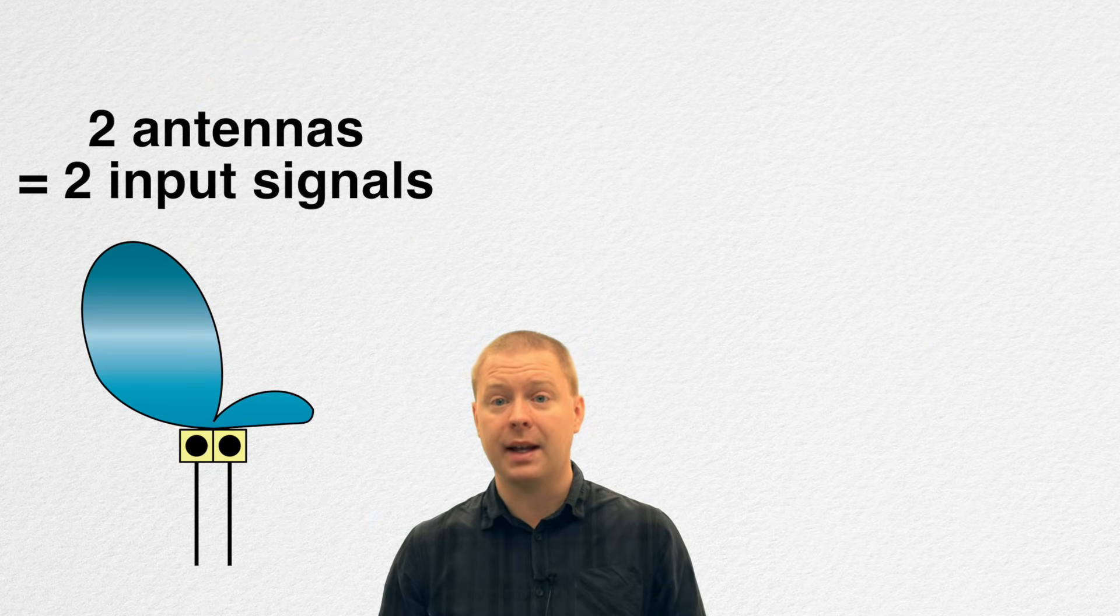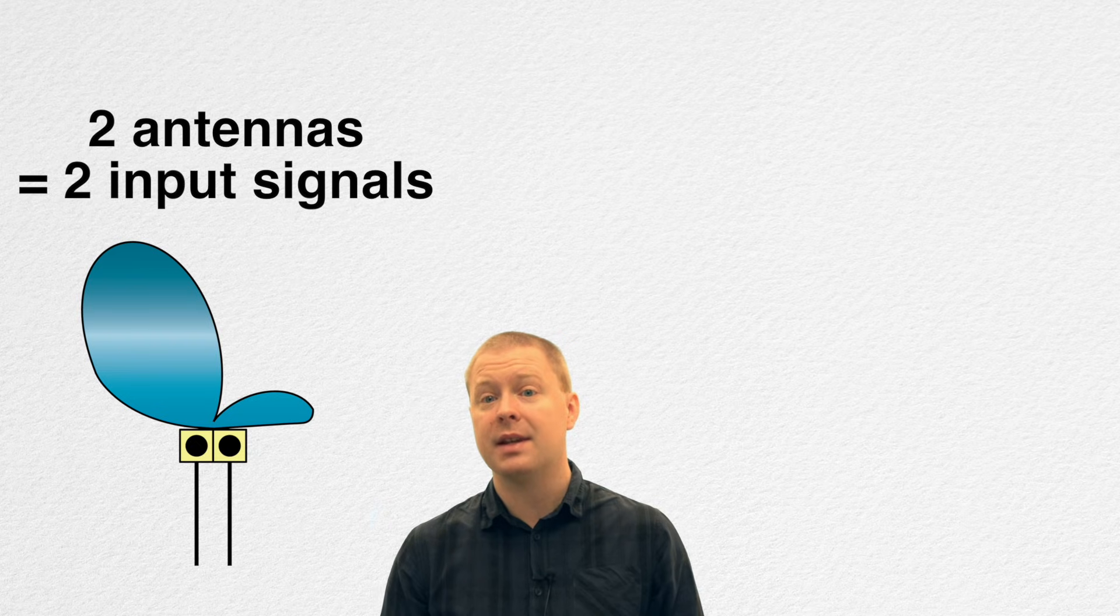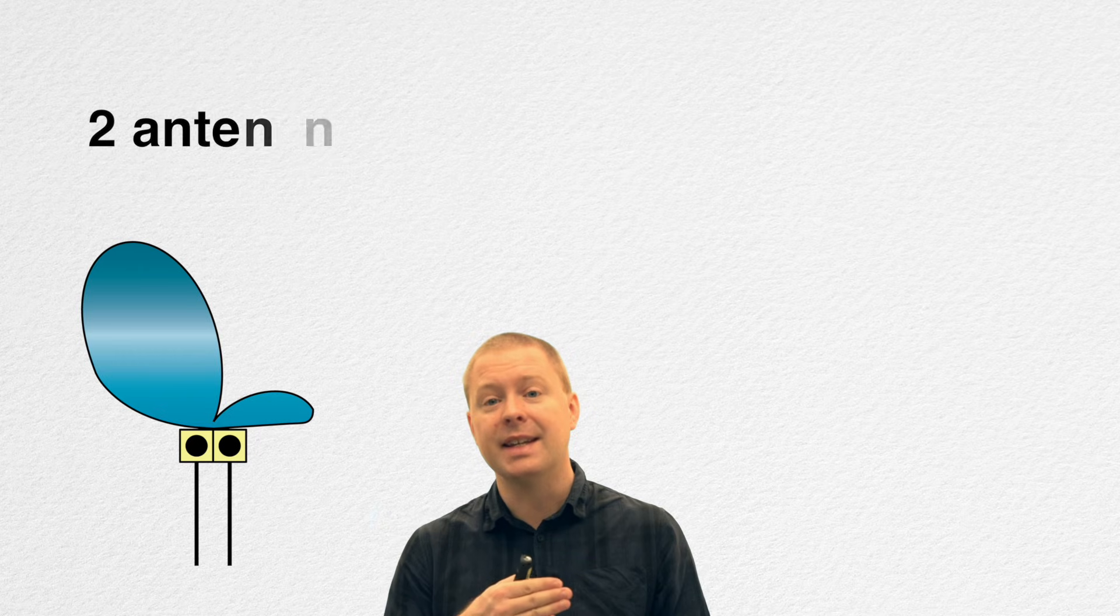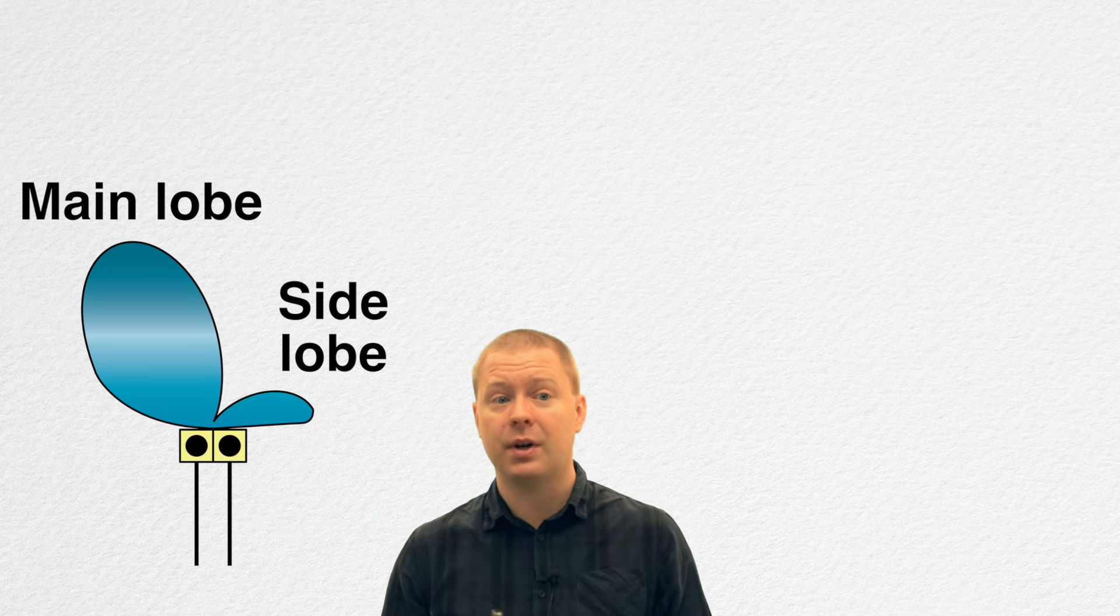We call these different radiating elements an antenna. The number of antennas is equal to the number of inputs that you are having. If you have two antennas, you can form a strong beam in a particular direction, but you will get some leakage in other directions as well, which we call side lobes. We have the main lobe pointing in the direction of interest and side lobes in other directions.